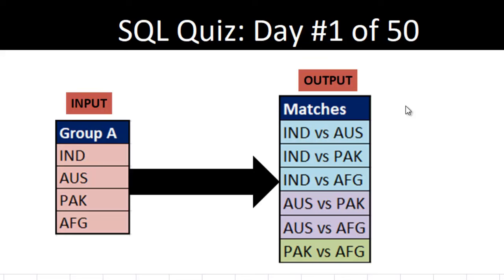India should play with Australia, India should play with Pakistan, India should play with Afghanistan. Australia should play with Pakistan, Australia should play with Afghanistan, and Pakistan should play with Afghanistan. So in the output we have India vs Australia, India vs Pakistan, India vs Afghanistan, Australia vs Pakistan, Australia vs Afghanistan, and Pakistan vs Afghanistan. How can we write the SQL query to get this output?